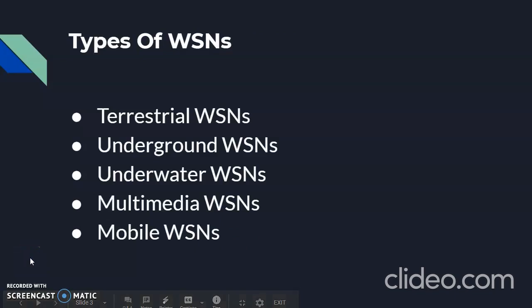Now, the types of WSN. We have 5 different WSNs: Terrestrial WSN, Underground WSN, Underwater WSN, Multimedia WSN, and Mobile WSN. Depending upon the environment, the type of network is designed so that it can be deployed underwater, underground, on land, and so on.